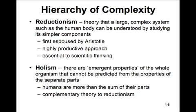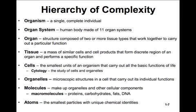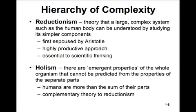There are emergent properties such that the whole organism cannot be predicted by simply summing up the parts. Each level we move up through the hierarchy of complexity, from atoms toward organism, more novel properties emerge — humans are much more than the sum of their parts. This holism is a complementary theory to reductionism, not an opposing one. It's important to look at the parts, but in order to fully understand what's going on, we have to look at the whole.